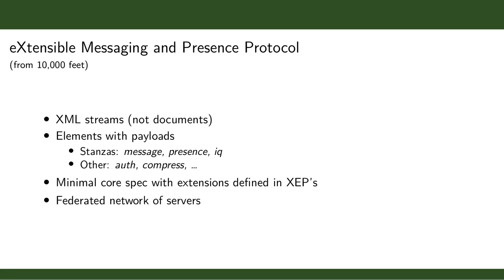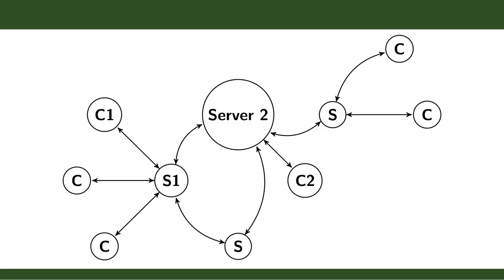Most importantly, and the biggest benefit to using XMPP over other protocols, is that like email it's federated. If you have a client C1 connected to server S1, you can send a client-to-server message — known as C2S — to that server. If you want to communicate with a friend on server two, S1 connects to S2 and sends what's called an S2S or server-to-server message, which S2 then forwards to the second client. This creates a broad federated network, similar to email.